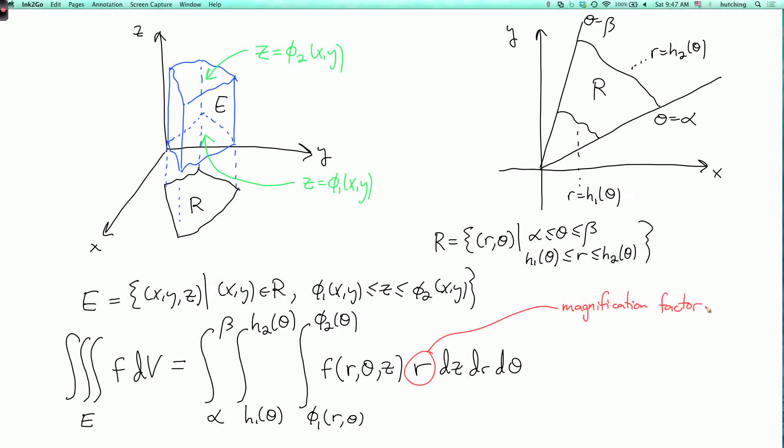And it comes from the fact that if you take a rectangle in polar coordinates where r varies by delta r and theta varies by delta theta, then its area is not delta r times theta. Rather, its area is approximately delta r times delta theta times r. So that's the basic formula for integrating in cylindrical coordinates, and we'll do some examples in the next lecture segment.